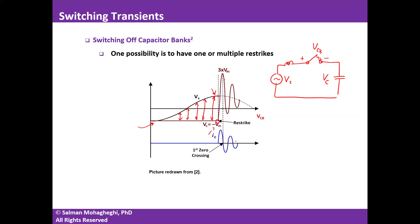The system voltage returns to its sinusoidal waveform. Now with the capacitor at 3·V_M, and the system voltage reaching minus V_M, the difference is 4·V_M. If another re-strike happens, the capacitor pulls the system voltage to 3·V_M and oscillates again. If the arc extinguishes at the next zero crossing, the capacitor could be left at minus 5·V_M.